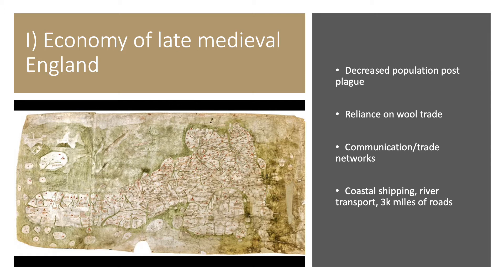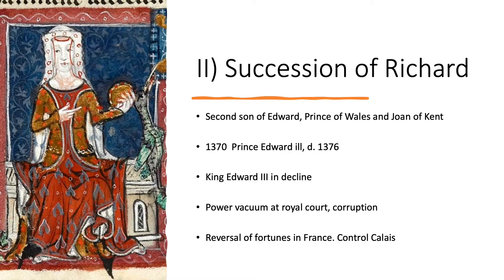Richard II was the second son of Edward the Black Prince, Prince of Wales, and his wife Joan of Kent. They had an older son who died at about age six, making Richard next in line to the throne. Prince Edward became increasingly ill after 1370 — possibly due to his extensive campaigns — and was in decline for quite some time, creating questions about succession, particularly as King Edward III was also in declining health and unable to assert his authority at court.